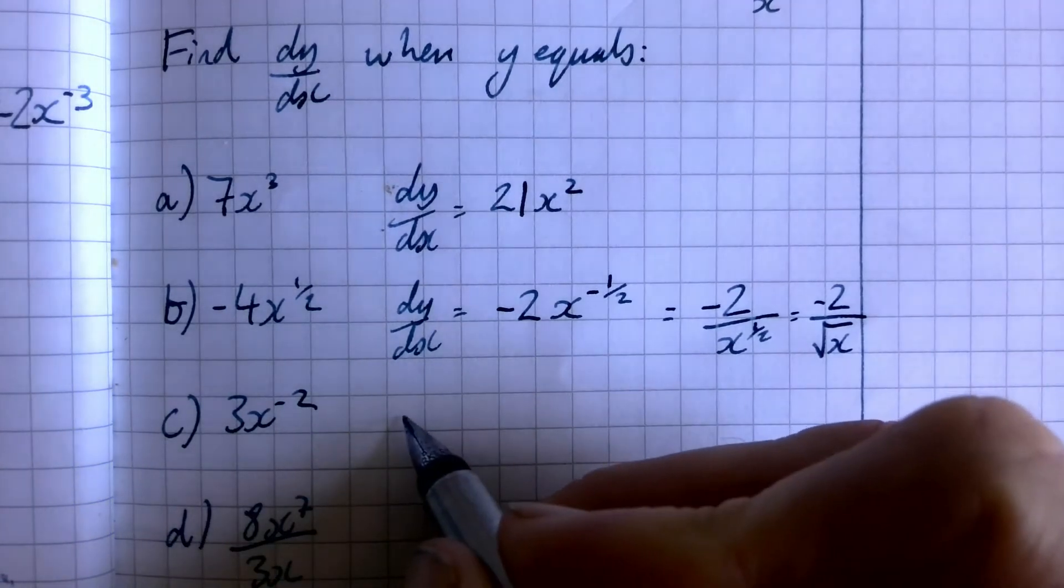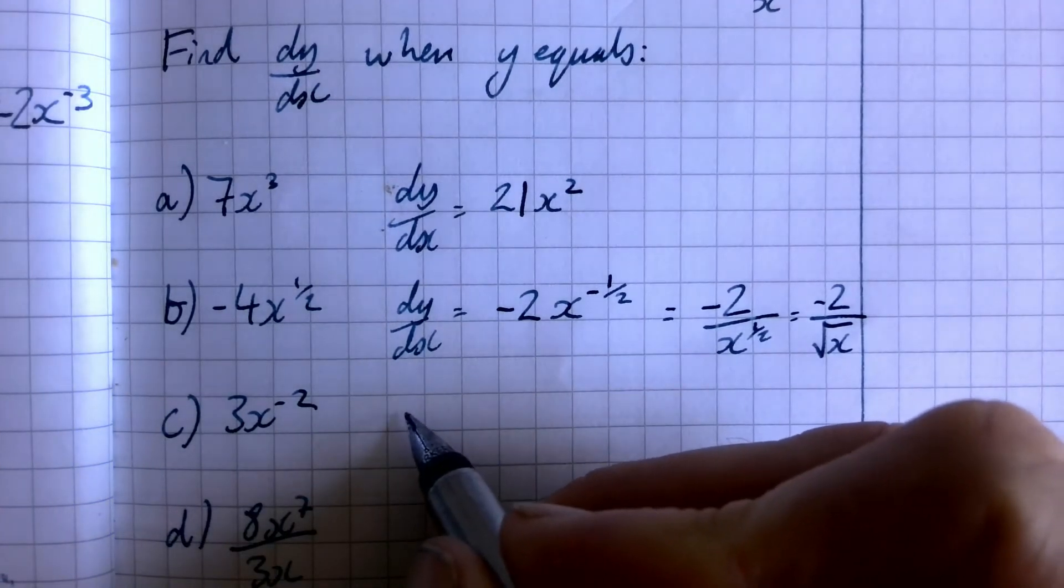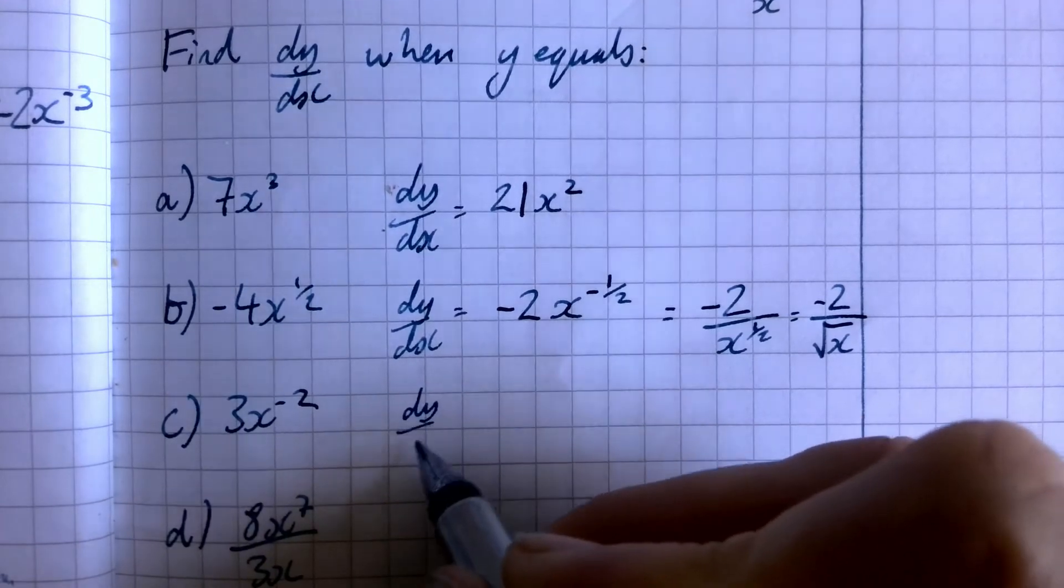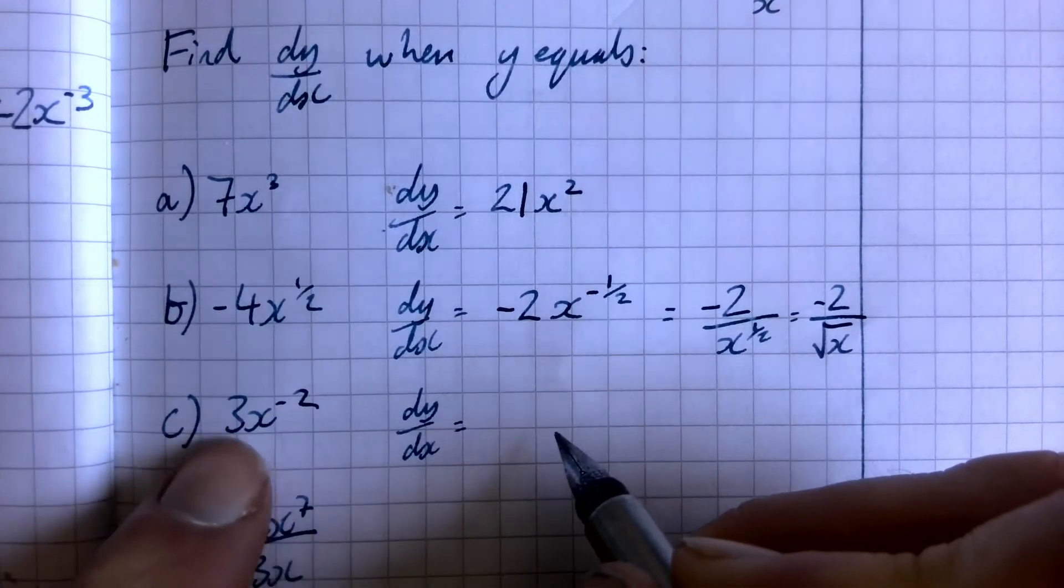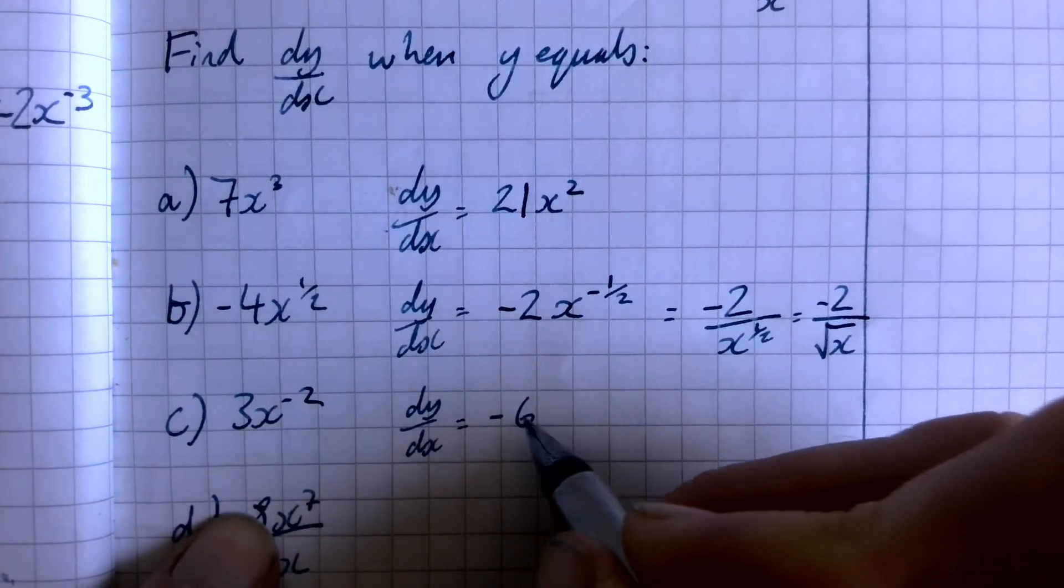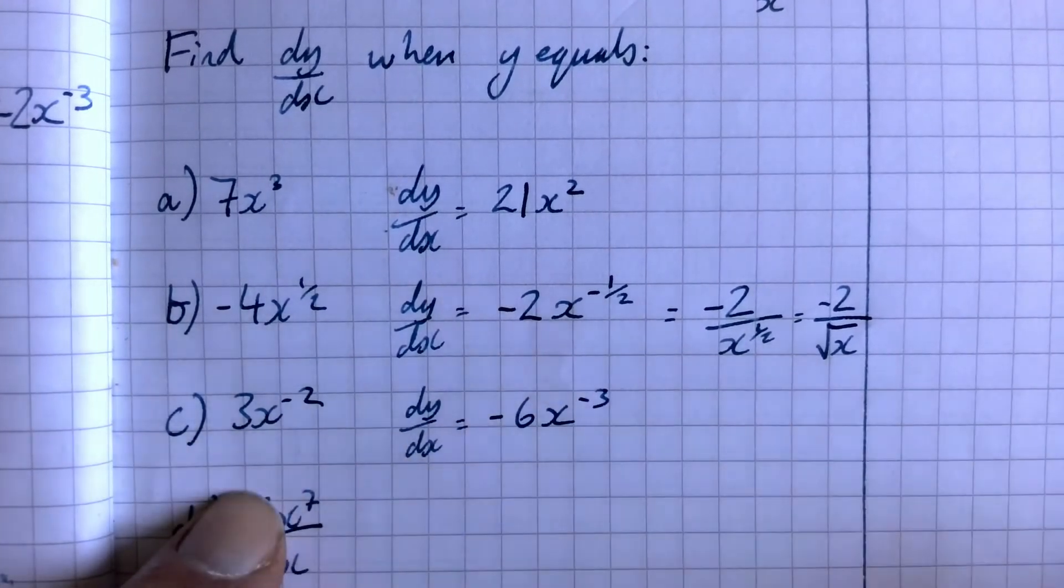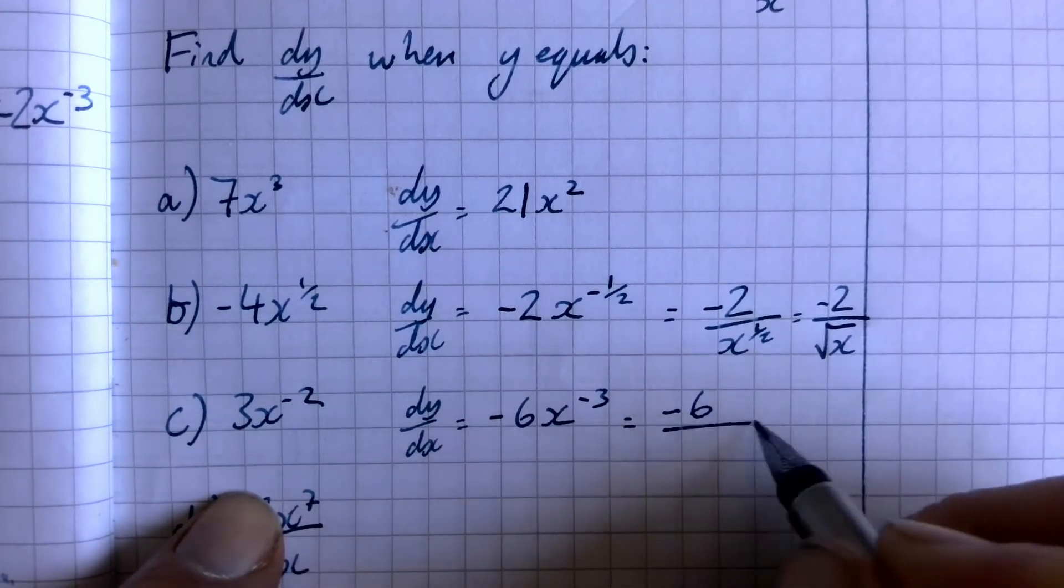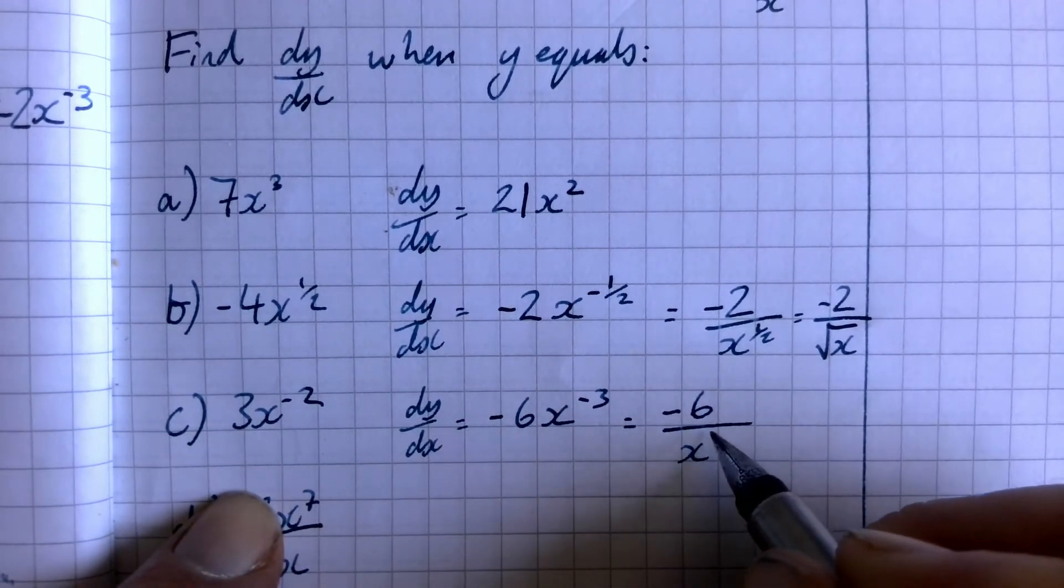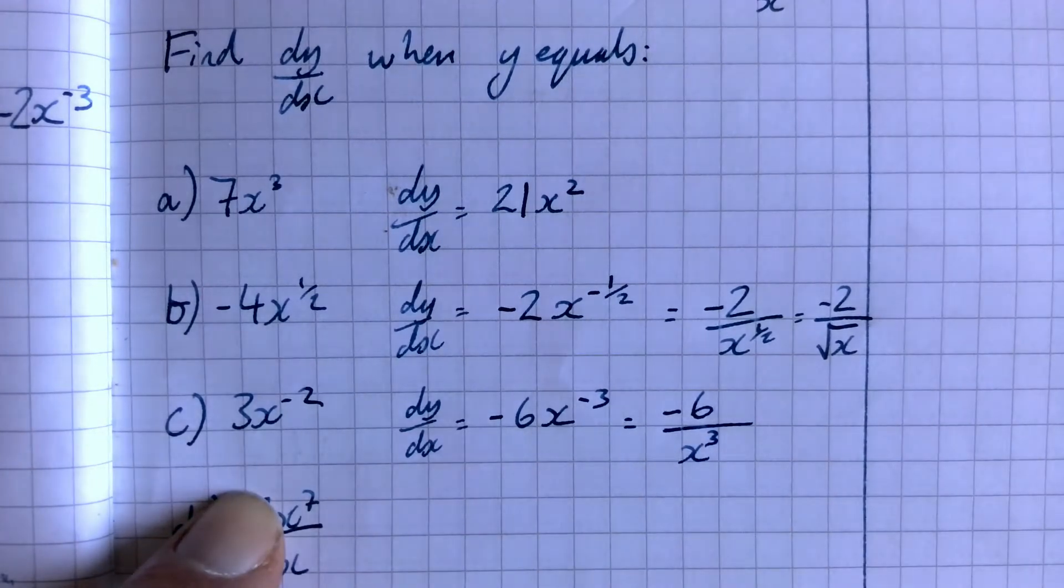On to the third, three x to the power minus two. So we've got dy over dx is going to be equal to negative two times three is negative six. Drop the power by one to minus three. We've done it. But just to neaten it up in terms of a fraction minus six over x cubed.